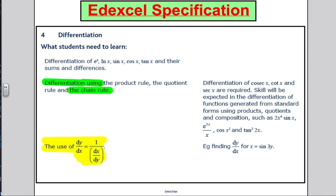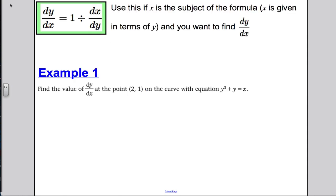Let's start by looking at an example straight away. The rule that you need to be aware of is that dy by dx is 1 divided by dx by dy.